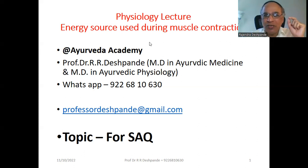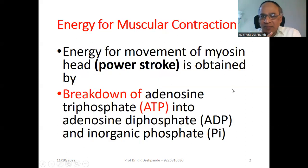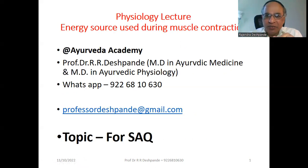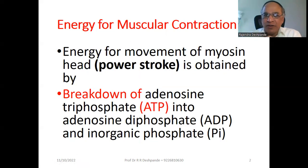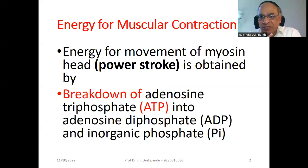Today's topic is the energy source used for muscle contraction — whenever muscle contraction takes place, what is the energy source? Energy for the movement of the myosin head. As you know, muscle contraction is based on the sliding filament theory, and the sarcomere is the structural and functional unit of muscle contraction.